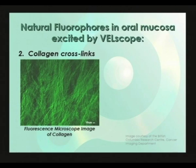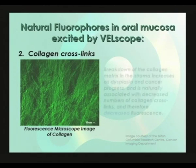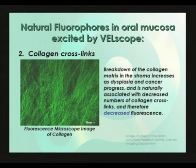The major contributor to stromal fluorescence is collagen and the collagen crosslinks that help maintain the structural integrity of the collagen matrix. Collagen crosslinks fluoresce strongly in the green when excited by blue light, as can be seen in this fluorescence microscope image of collagen. As dysplasia and cancer progress, the collagen matrix starts to break down to make way for the cancer to invade at the basement membrane. This breakdown is associated with decreased numbers of collagen crosslinks and therefore decreased stromal fluorescence.